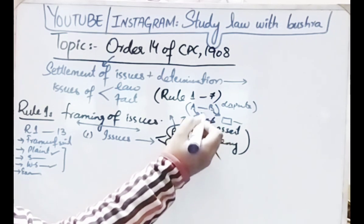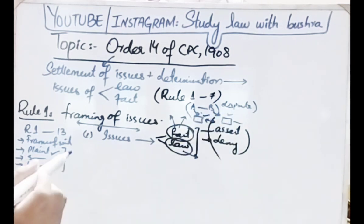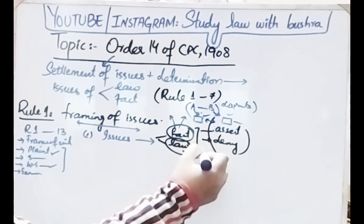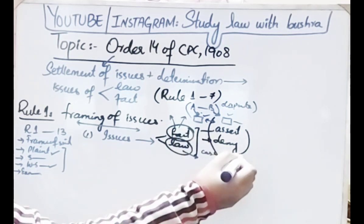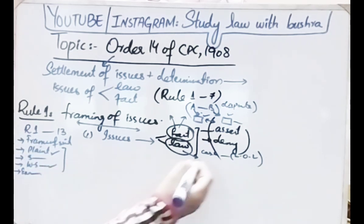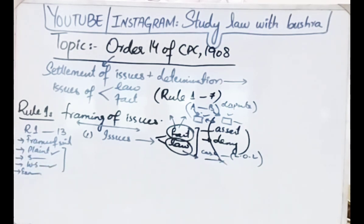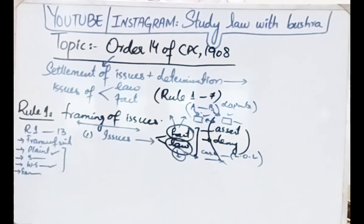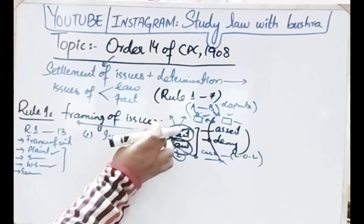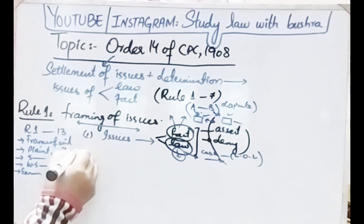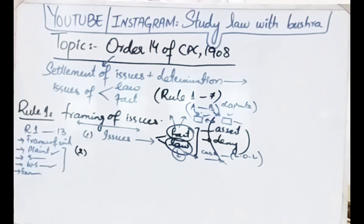For issues of law, suppose A files a suit against B regarding ownership of a house, but the suit is barred by limitation — the limitation period was three or four years but A is filing after six years. Here issues arise on law. The court frames those issues and then resolves the dispute between the parties.